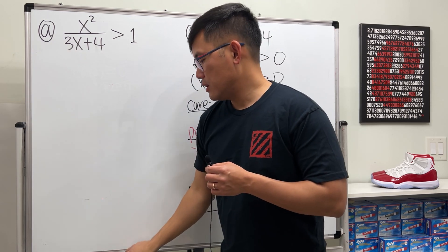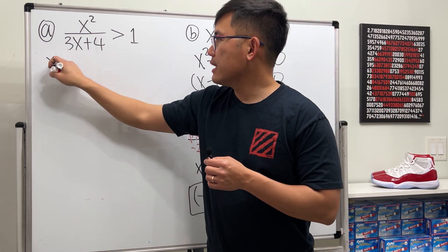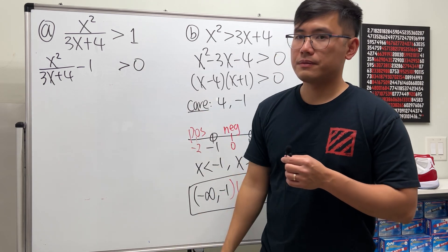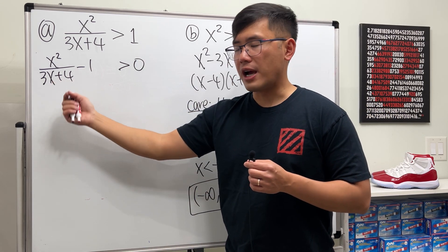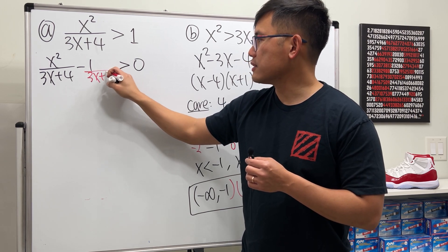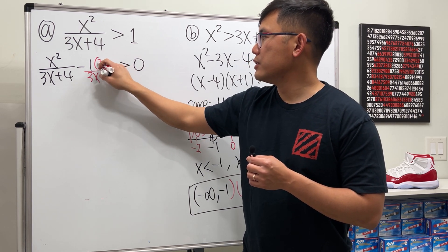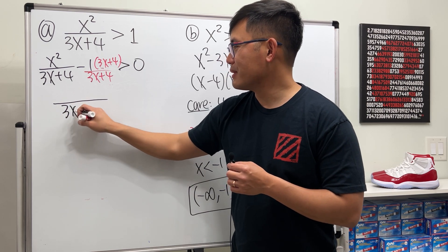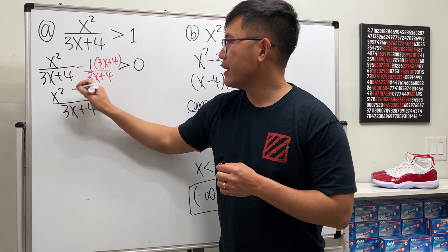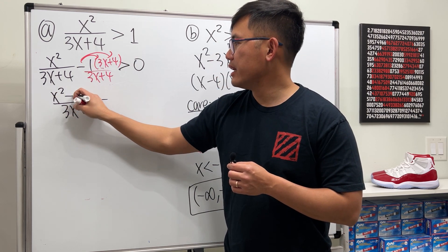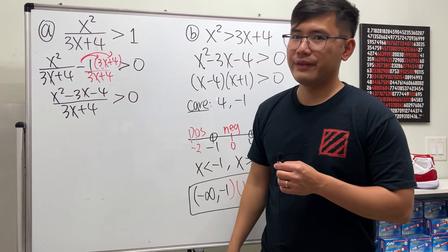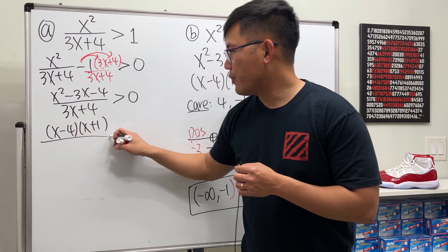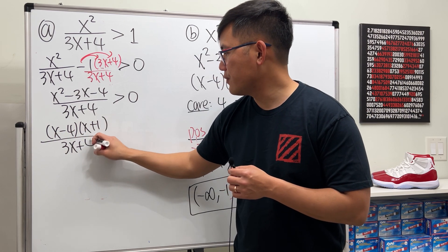The safe approach: move the 1 to the other side — x² / (3x + 4) - 1 > 0. Combine the fractions using common denominator (3x + 4): the top becomes x² - (3x + 4), which gives x² - 3x - 4, all over (3x + 4), greater than zero.